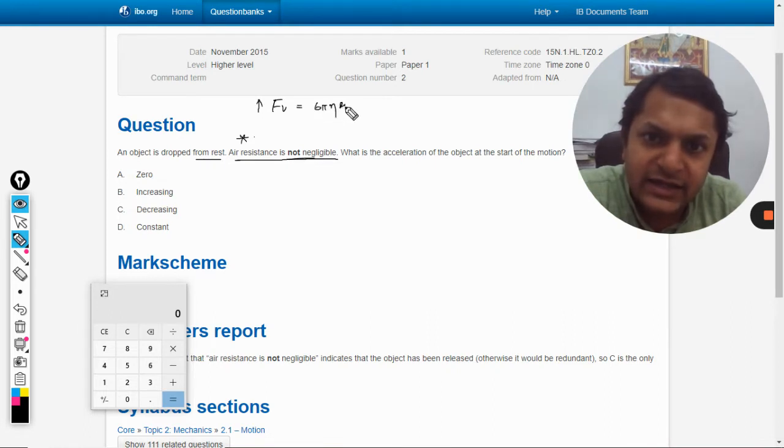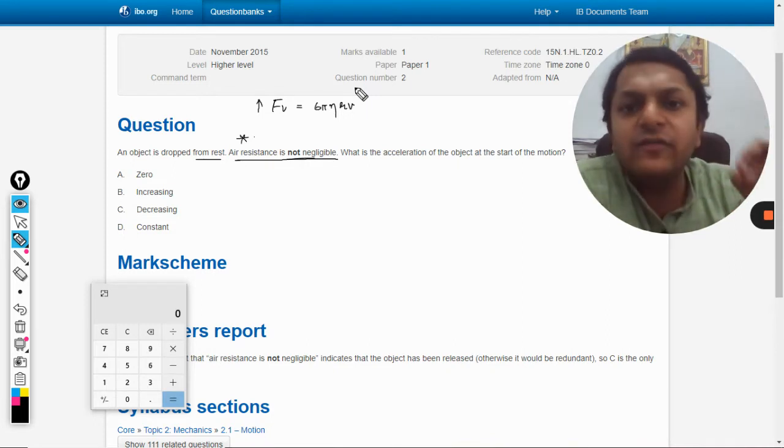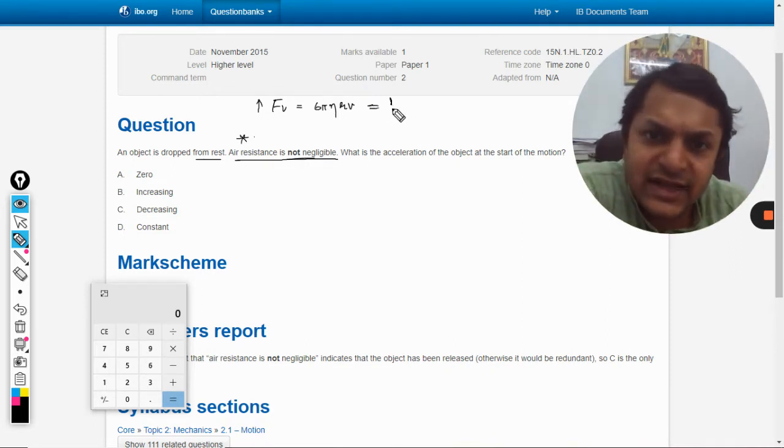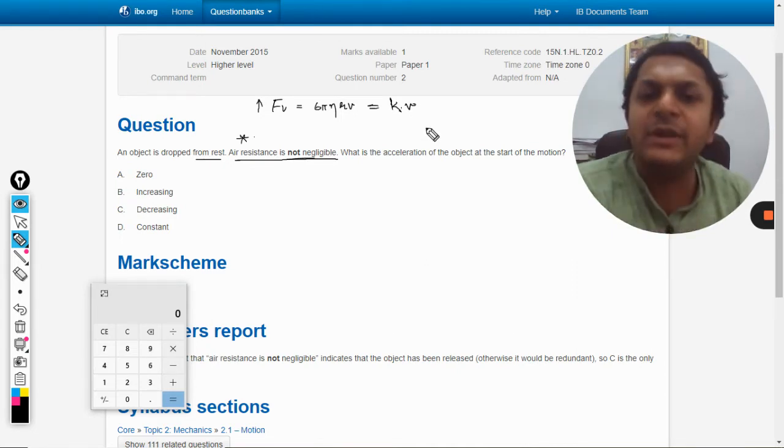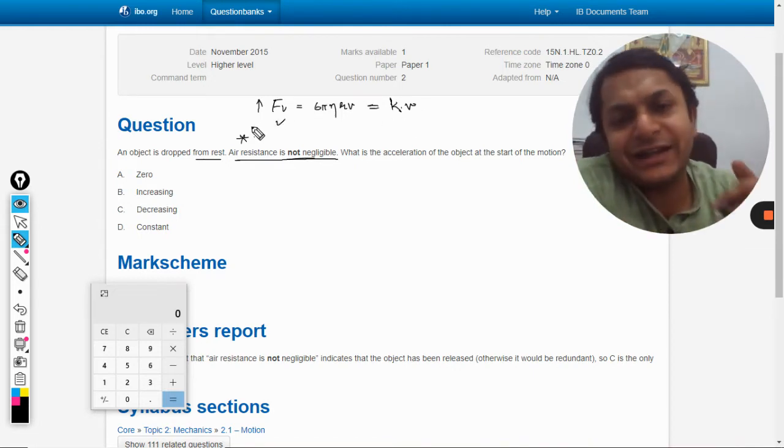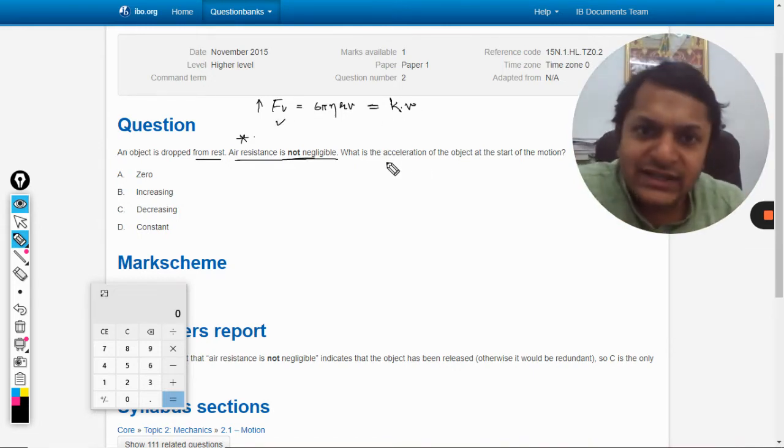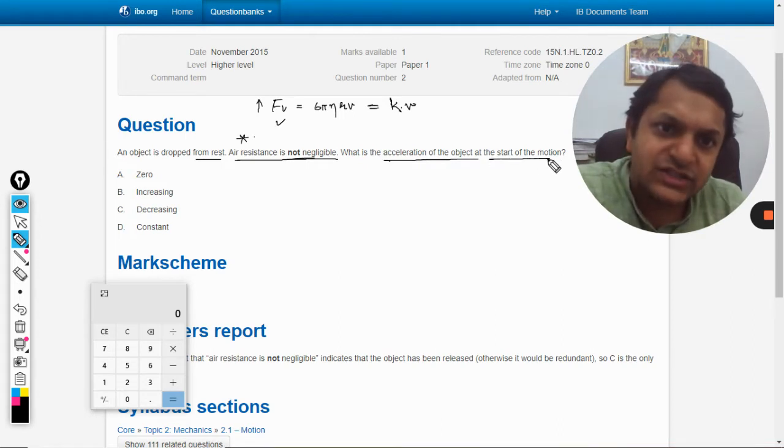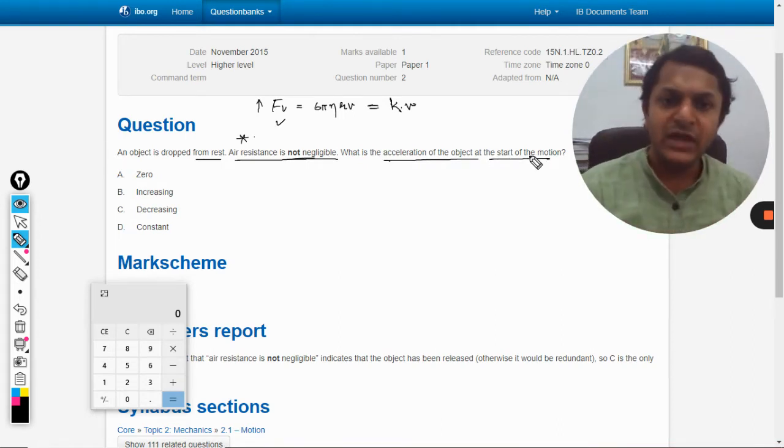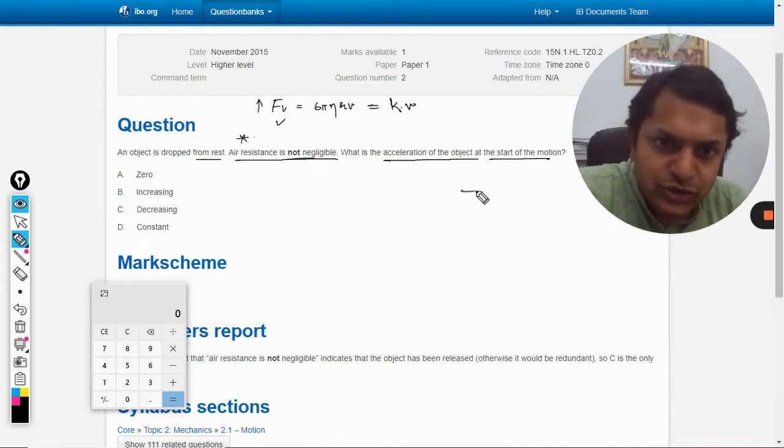The drag force is given by 6πηrv where η is the coefficient of viscosity, but without going that deep, we can keep it as F equals a constant k multiplied by v, the instantaneous velocity. This is the force acting upward. What is the acceleration of the object at the start of the motion? We are concentrated only on the start of the motion.